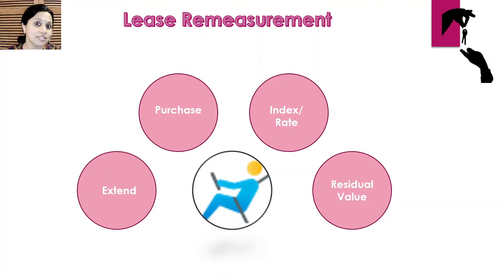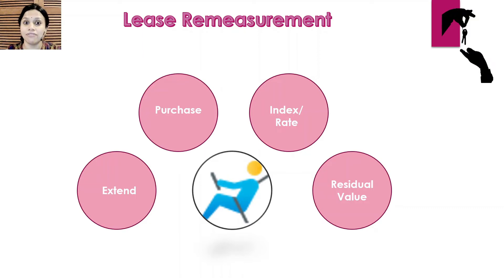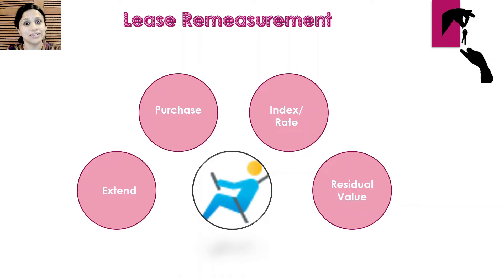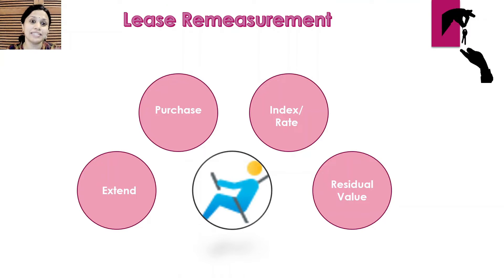What happens if these assumptions change? Two or three years into the lease he finds out that he will indeed purchase the asset, which is contrary to the assumption he made before. Is this lease written in stone that he can't change? No. What he needs to do is recompute the lease liability, and this recomputation of the lease liability is what is known as lease remeasurement.